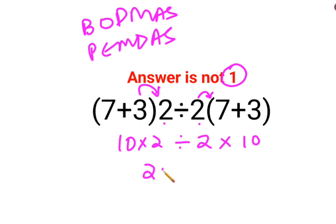So this becomes 20 divided by 20. The answer is 1. No, that is not how these things work.